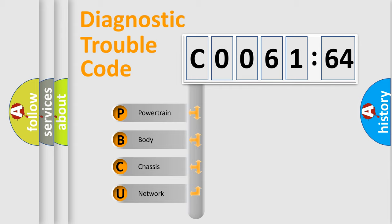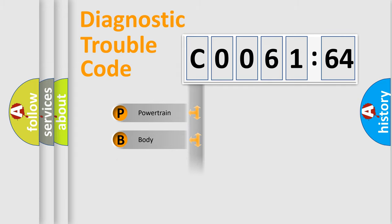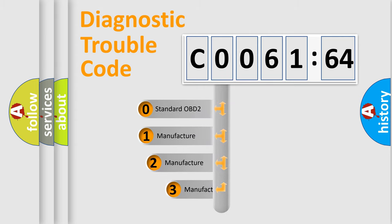We divide the electric system of automobile into four basic units: Powertrain, Body, Chassis, and Network. This distribution is defined in the first character code.